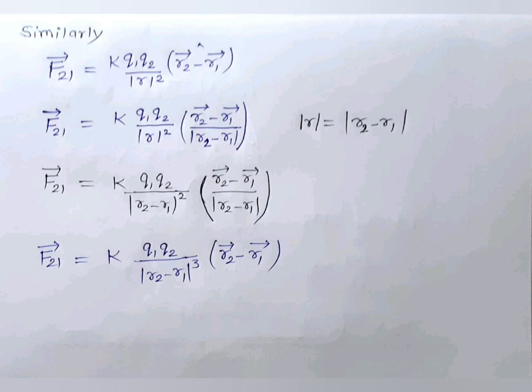So we have completed the vector form of Coulomb's law. We have found two results — F12 and F21 — two forces in different directions. The values of these forces are equal in magnitude and opposite in direction. In the same way, we can write Coulomb's law for unlike charges, which are attractive in nature.